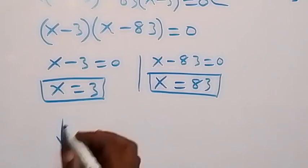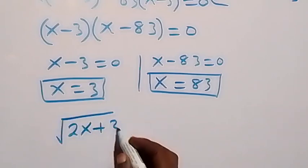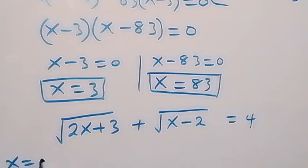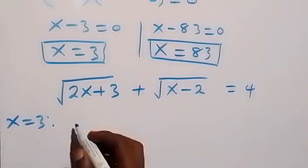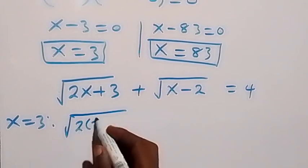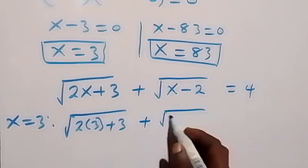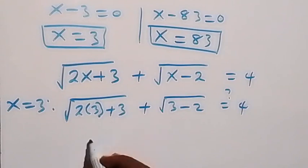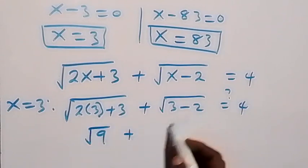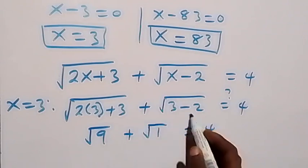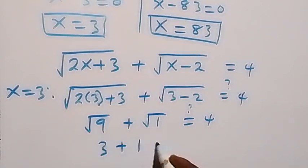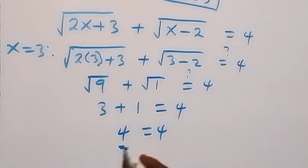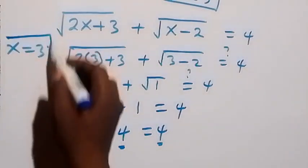The original equation is: square root of 2x plus 3, plus square root of x minus 2, equals 4. For x equals 3: square root of (2 times 3 plus 3) plus square root of (3 minus 2) equals square root of 9 plus square root of 1, which is 3 plus 1 equals 4. The left-hand side equals the right-hand side, so x equals 3 satisfies the problem.